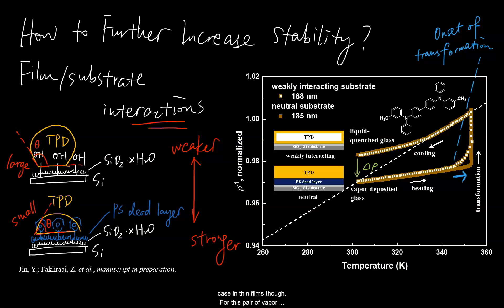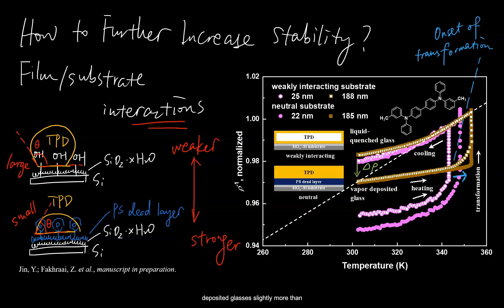This is no longer the case in thin films though. For this pair of vapor-deposited glasses slightly more than 20 nanometers, not only is the transformation onset temperature higher, but also the density of the glass film deposited on a neutral substrate is higher. This indicates both the higher kinetic stability and a higher thermodynamic stability.